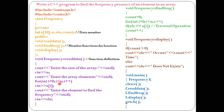Again it goes to the for loop and i gets incremented by one. i becomes one, one is less than five — condition true — the statement executes again, storing values in a[1], a[2], a[3], and a[4]. All five elements are stored in consecutive memory locations. When i becomes five, five is less than five is false, so the loop exits. Then cout prints 'enter the element to find the frequency', and cin stores the value in element — say we enter two.